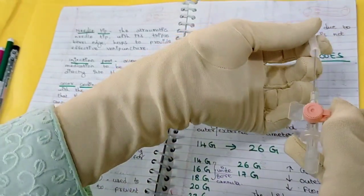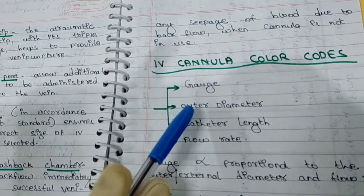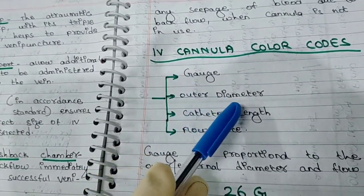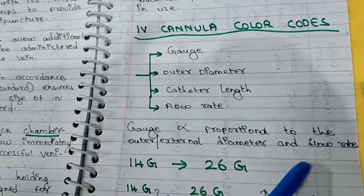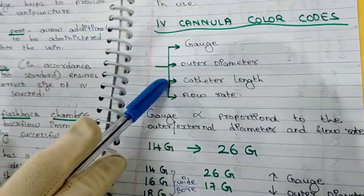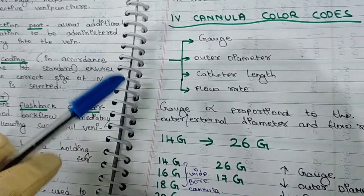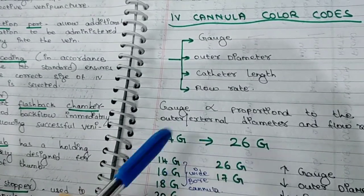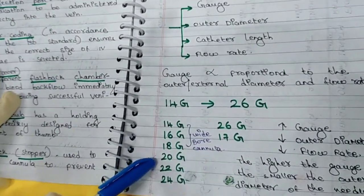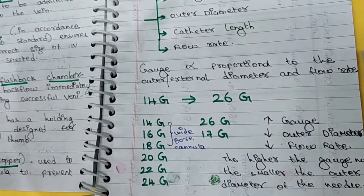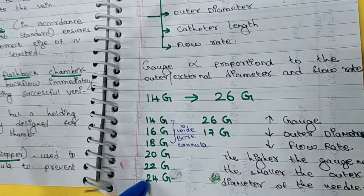Then next we will go for the IV cannula color codes. When it comes to IV cannula, there are four things we must understand clearly: the gauge, outer diameter, catheter length, and flow rate. The gauge is inversely proportional to the external or outer diameter and the flow rate — meaning the higher the gauge, the smaller the outer diameter and the lesser the flow rate. We have IV cannulas ranging from sizes 14 to 26 gauge, all in even numbers except 17 gauge: 14, 16, 18, 20, 22, 24, 26, and 17 gauge.